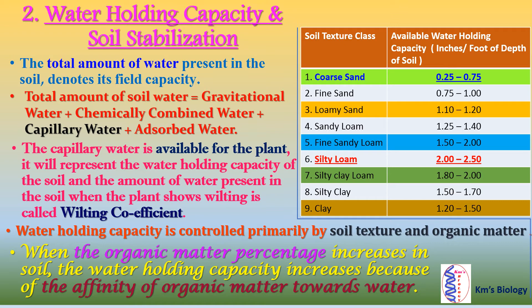The second important factor of the SPAC system is water holding capacity and soil stabilization. The total amount of water present in the soil denotes its filled capacity. Total soil water equals gravitational water plus chemically combined water plus capillary water and adsorbed water. The capillary water is available for the plant and represents the water holding capacity of the soil. The amount of water present in the soil when the plant shows wilting is called the wilting coefficient. Water holding capacity is controlled primarily by soil texture and organic matter. When organic matter percentage increases in soil, the water holding capacity increases because of the affinity of organic matter towards water.